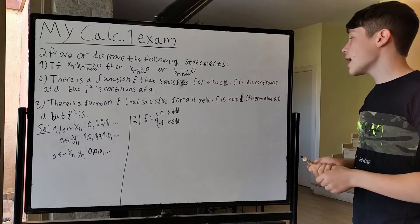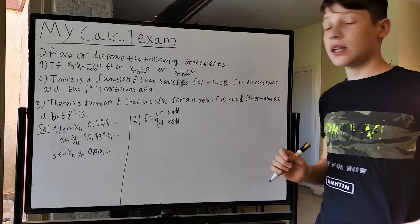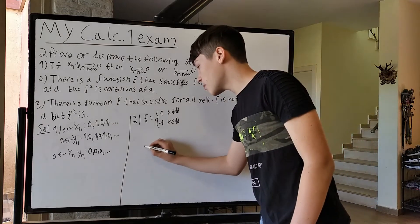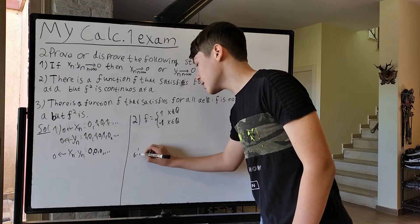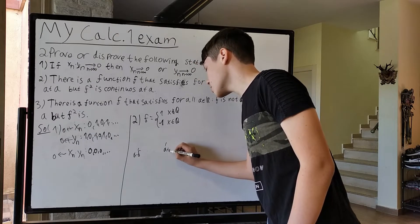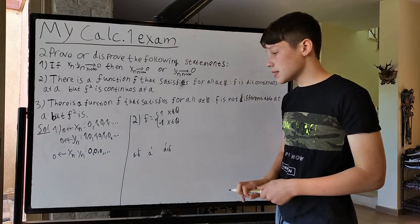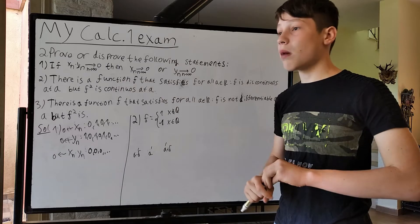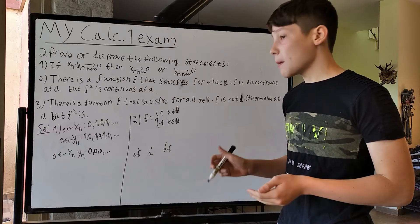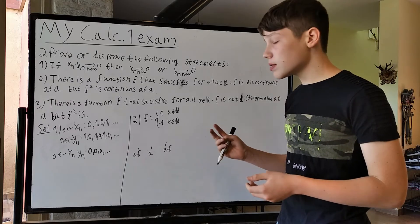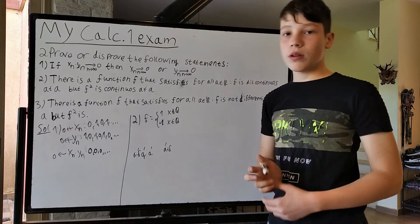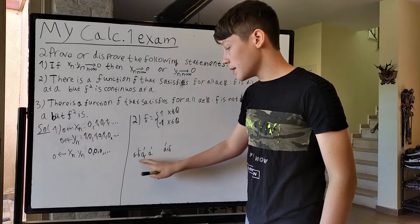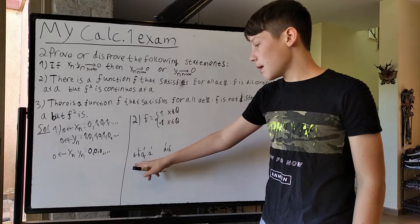Now let's see. This function is discontinuous at any a, because if you assume it's continuous, that means from any point onward — in the interval (a - δ, a + δ) — the difference from f(a) starts being smaller than any ε you want. But we know between any two real numbers there exists some rational number.